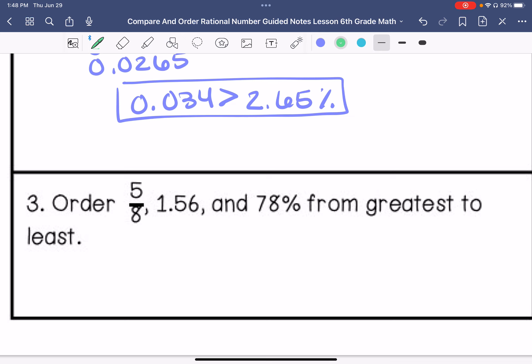Order these from greatest to least. I'm going to put them all in decimal form. So this is 0.78, 1.56, and then this one is 0.625. So comparing these, greatest is 1.56, then 78%, and then 0.5.